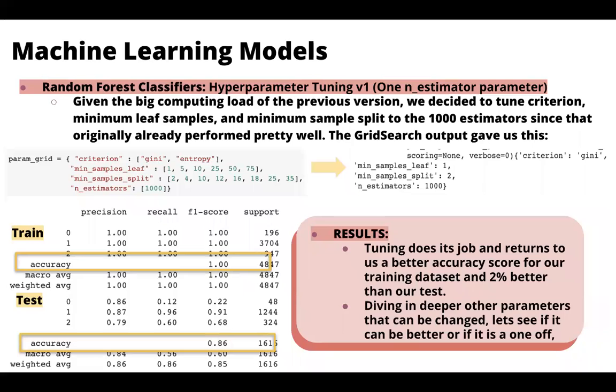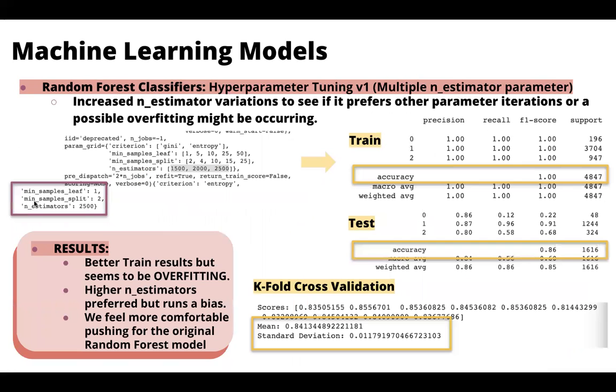So for this first version, we used our original number of estimators at a thousand, and then wanted to look at the number of leaf samples and the sample split and also the criterion to be using, and played around with that. This took a lot of computing power. So it took a lot of time for us to get the results, but it turned out a hundred percent accuracy rate for train and 86 percent for test, which is 2 percent better than our original. So we wanted to move further and see if we could keep pushing it without the possibility of overfitting, which happens when you do hyperparameter tuning.